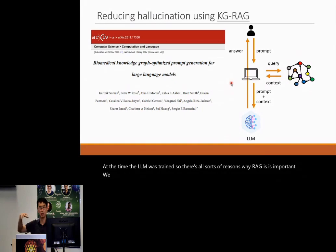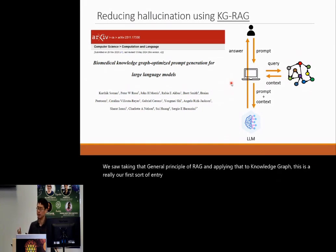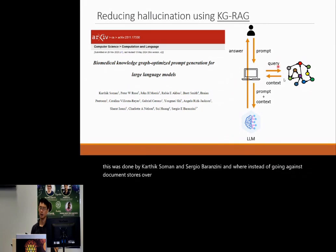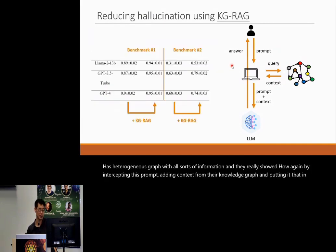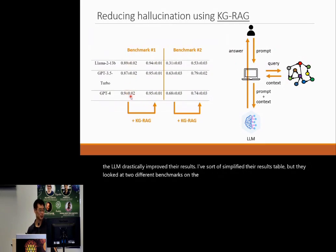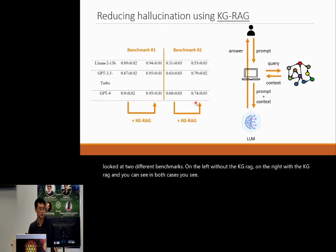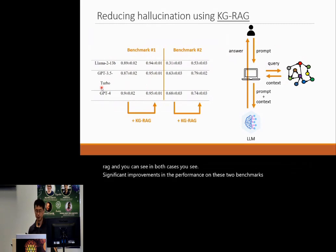Taking that general principle of RAG and applying it to knowledge graphs is our first entry point into how these things can work together. This was done by Karthik Soman and Sergio Baranzini, using the SPOKE knowledge graph — a heterogeneous graph with all sorts of information. By intercepting the prompt, adding context from the knowledge graph, and putting that into the LLM, they dramatically improved results. Looking at two benchmarks, with and without KG-RAG, you see significant improvements in performance for the three LLMs tested.